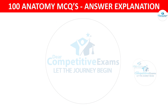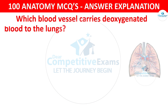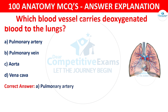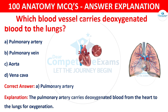Question number 97: Which blood vessel carries deoxygenated blood to the lungs? The options are: Pulmonary artery, Pulmonary vein, Aorta, or Vena cava. The correct answer is A — pulmonary artery. The pulmonary artery carries deoxygenated blood from the heart to the lungs for oxygenation.